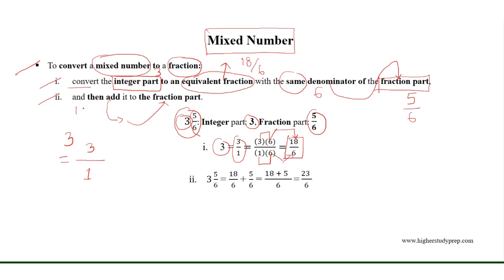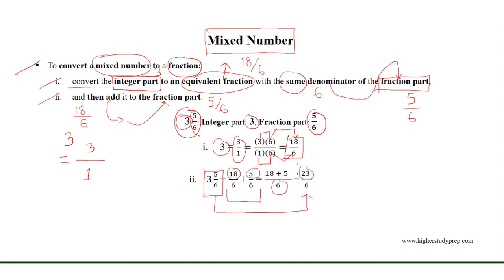Then, we need to add the equivalent fraction 18 over 6 to the fraction part 5 over 6. Keeping the denominator 6 the same, we add the numerators 18 and 5, and their addition results in 23. Thus, the mixed number 3 and 5 over 6 is equal to the fraction 23 over 6.